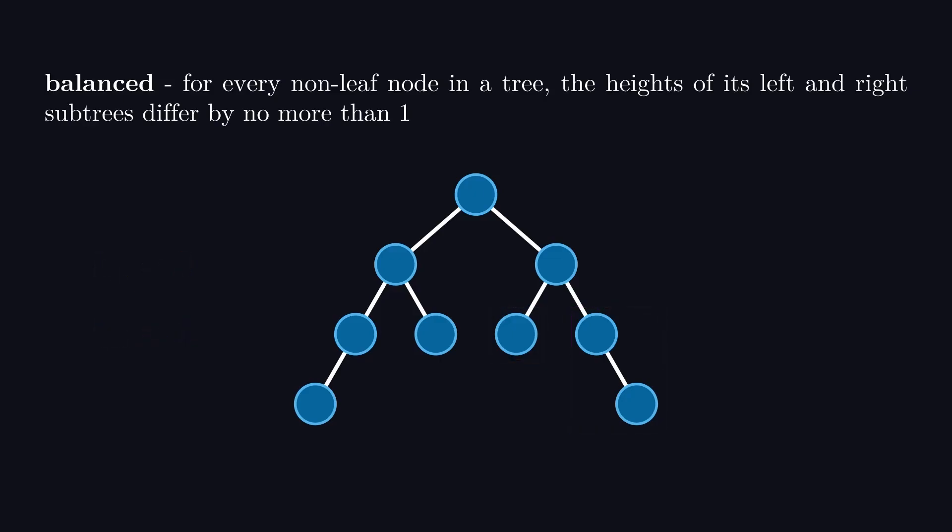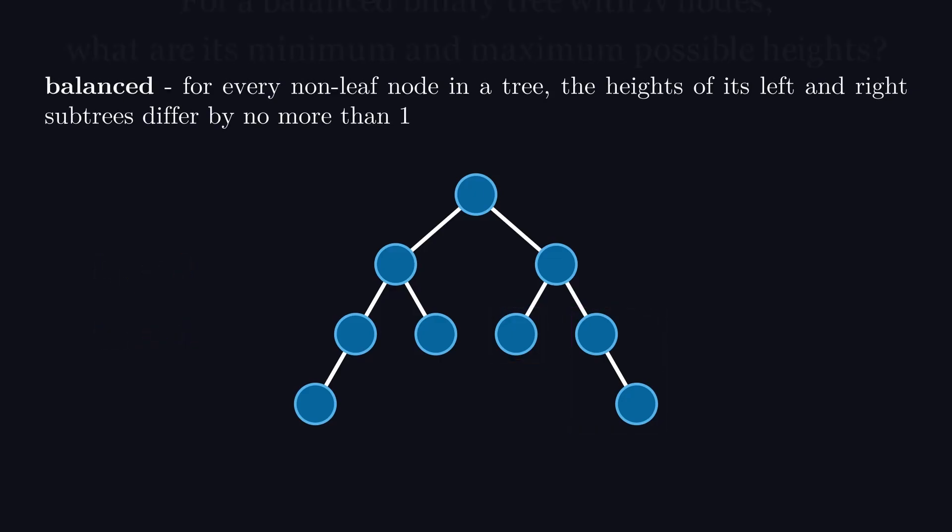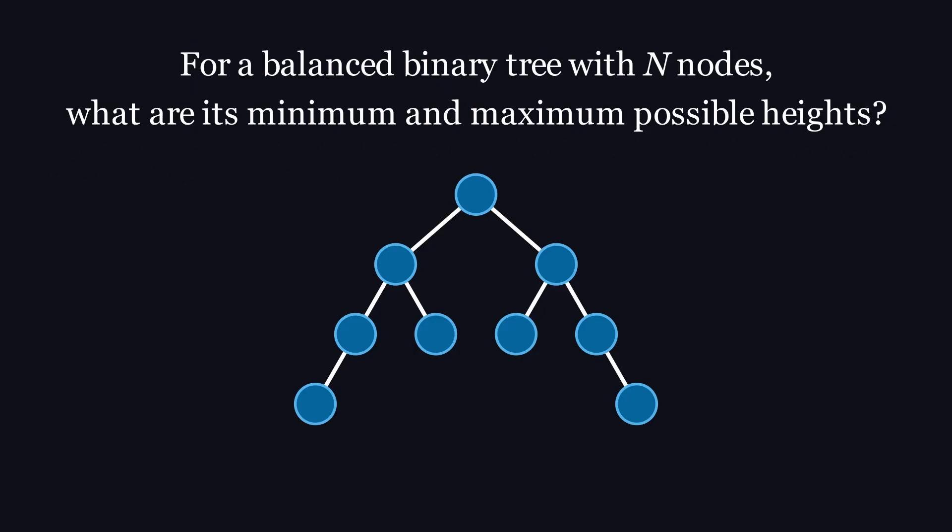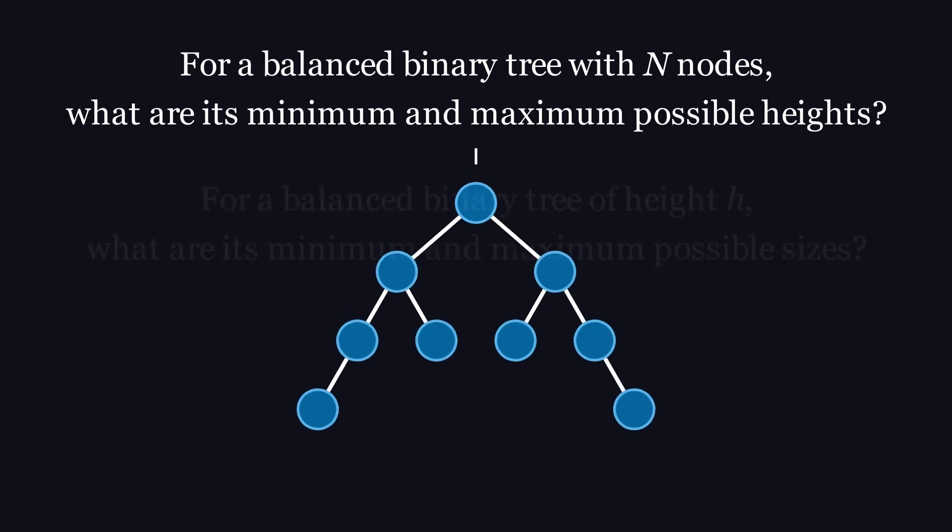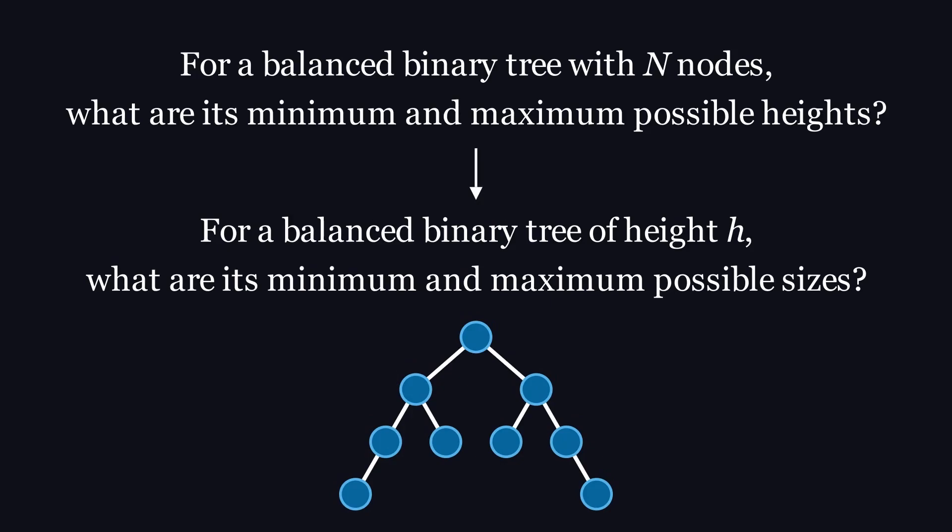With these definitions out of the way, the question that naturally follows is, for a balanced binary tree with n nodes, what are its minimum and maximum possible heights? I encourage you to try this problem out for yourself and come back whenever you're ready. It can be helpful to consider the reverse of this question. For a balanced binary tree of height h, what are its minimum and maximum possible sizes? This is the question I'll be starting with. To give this problem some labels, I'll call a balanced binary tree's minimum possible size p_h and its maximum possible size q_h, where h is the height.